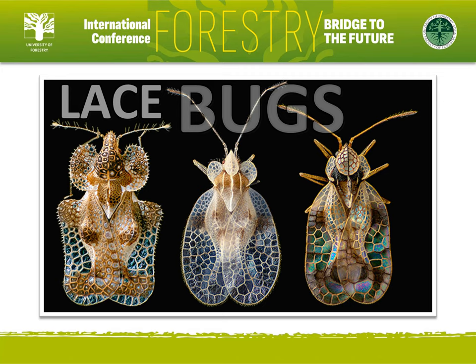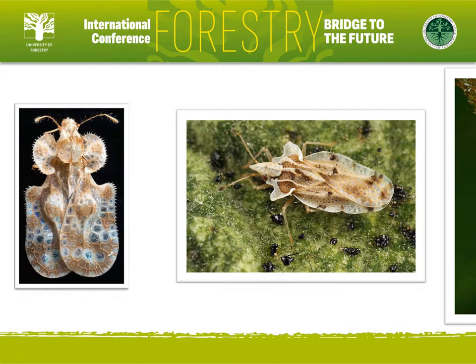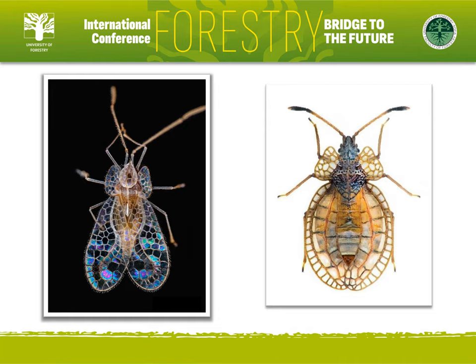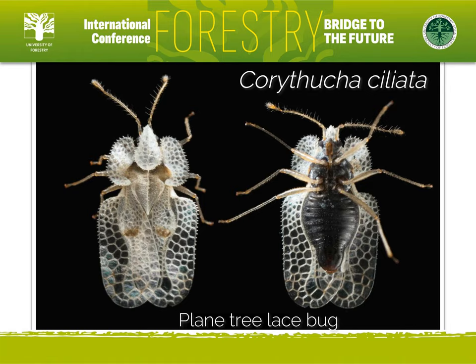With about 2,000 species worldwide, lace bugs have gained their name because of obvious resemblance to lace. All are small insects, adults being 2 to 10 millimeters long. They feed by sucking the cells of leaves, often are species specific, and usually spend their entire life cycles on one plant or even one leaf.